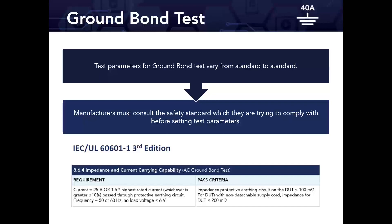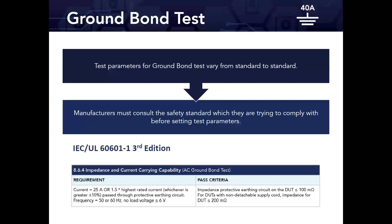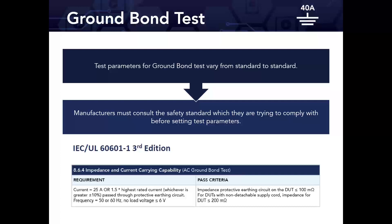Under the pass criteria: impedance of the protective earthing circuit should be less than or equal to 100 milliohms for DUTs with non-detachable supply cords, and less than 200 milliohms for detachable supply cords. Those are very small numbers, so offsetting components of your test system — adapter boxes, return leads — is important to ensure they don't count against you, since 100–200 milliohms is a very small gap between pass and fail.